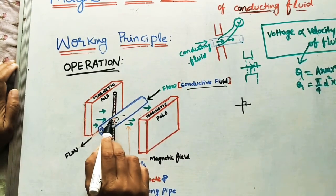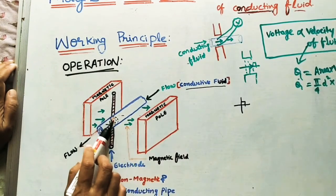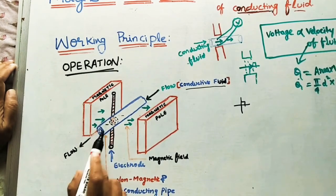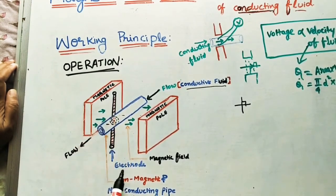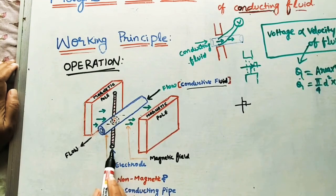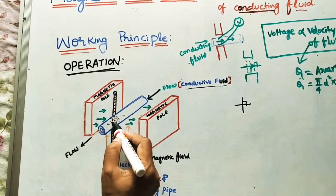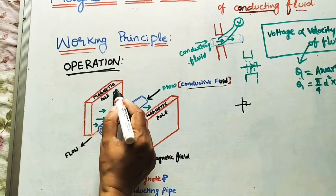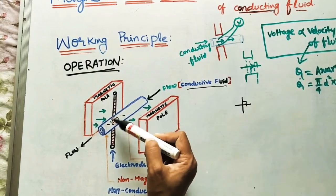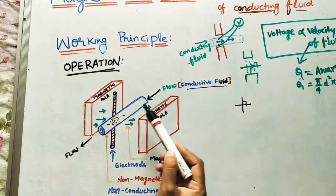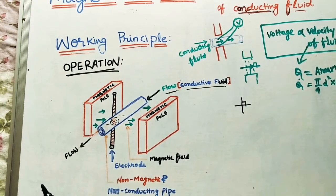Because of this flowing conducting fluid cutting the magnetic field, magnetic field is also present inside the fluid. Whenever the flow comes like this, this flow cuts the magnetic field, and because of it, voltage will generate. That voltage can be found by connecting two electrodes or wires to the pipe and measuring with the voltmeter. Whatever voltage is generated in the fluid, we measure it by connecting two terminals to the voltmeter. This voltage gives the Q value of the flow. This is the main working operation of the magnetic flow meter.